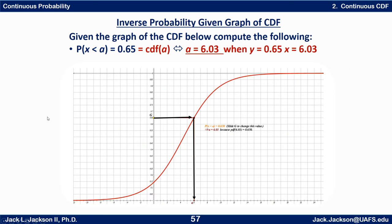Let's look at an example. Here's a CDF graph where we're given that the probability that x is less than a is 0.65, so we know the cumulative probability but not a. Since the probability that x is less than a equals the CDF of a, we have the y value 0.65. Find 0.65 on the y-axis, go straight across horizontally to the curve, then come down to read off the x value, which is about 6.03.